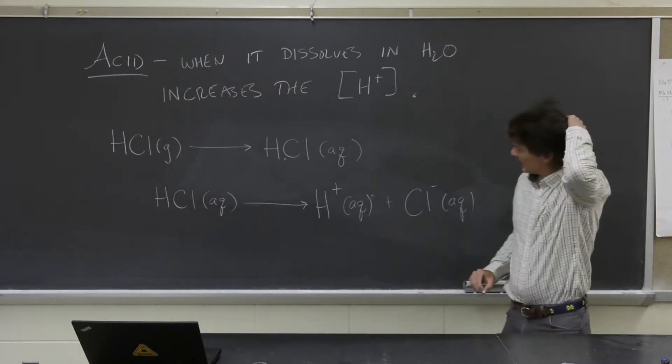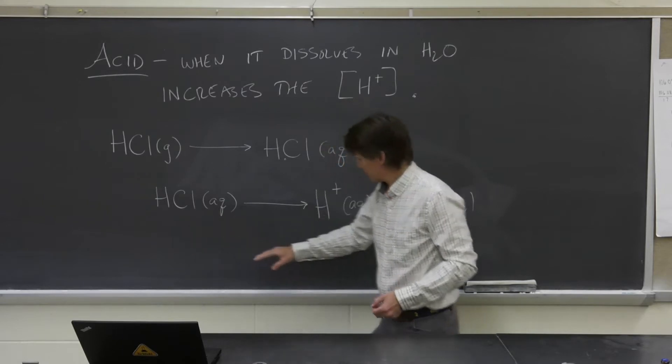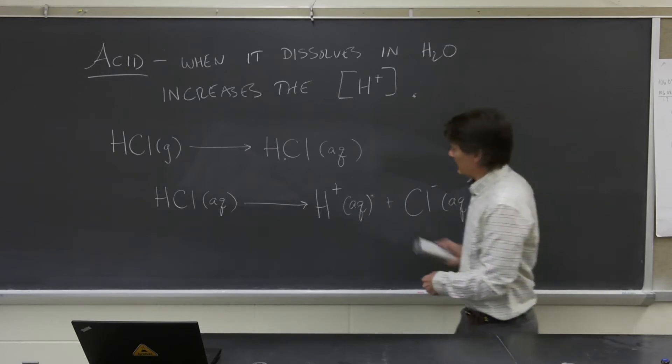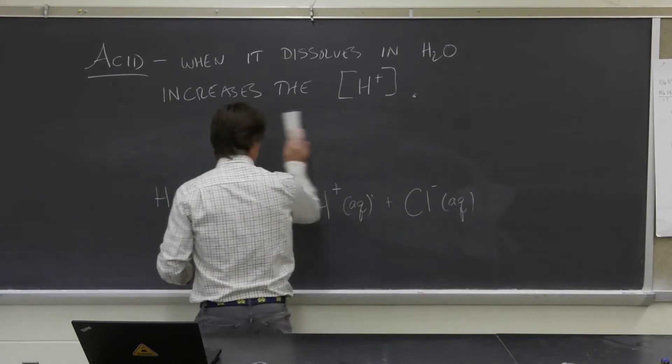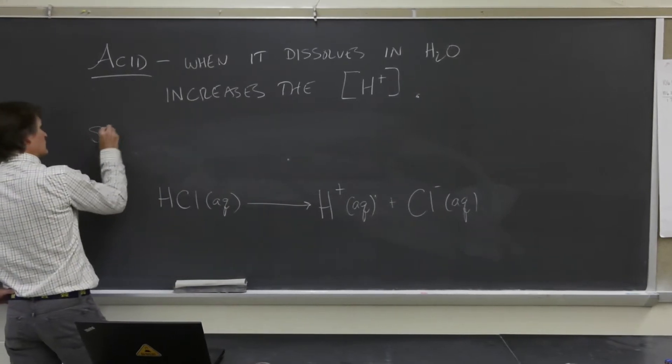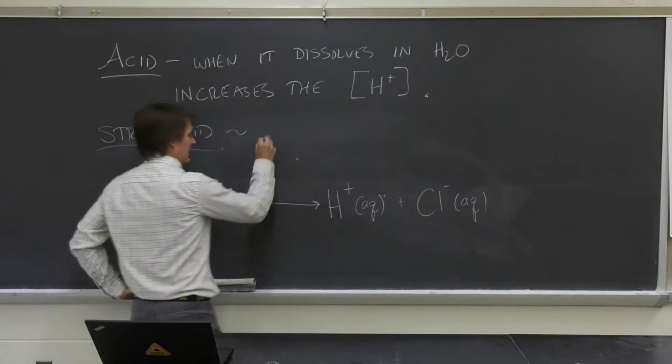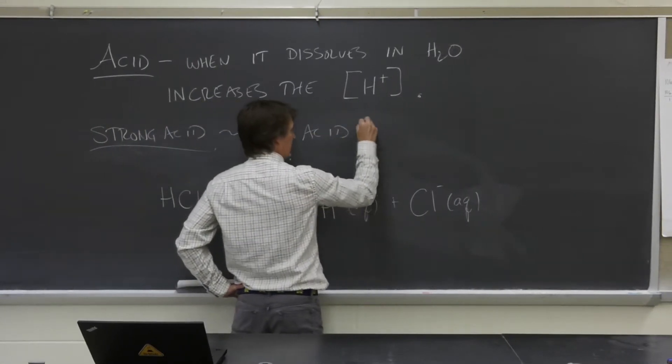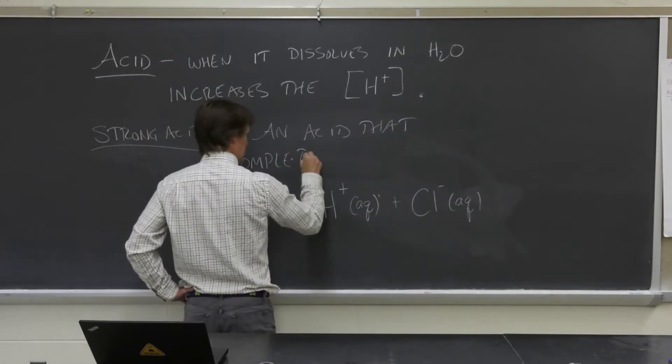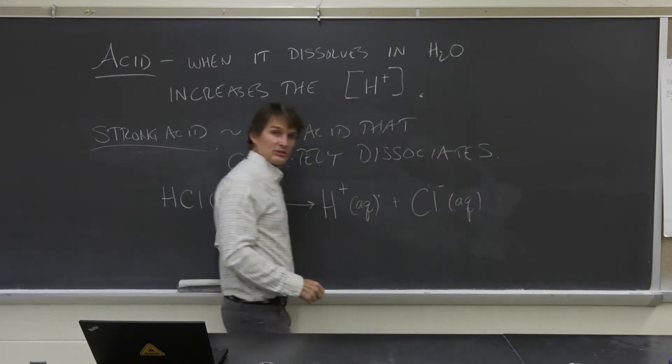It goes 100%, all of the HCl gas that ends up dissolving in water, all of it dissociates into H plus and into chloride ions. And because of this fact, we call it a strong acid. So HCl is a strong acid. Hydrogen chloride is a strong acid. A strong acid is an acid that completely dissociates when dissolved in water, 100% of it.